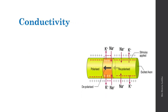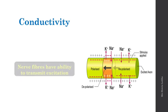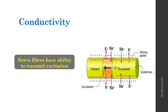Second is conductivity. Because of the change in ionic potential, nerve fibers are able to transmit excitation by the process of polarization, depolarization, and repolarization. Every part of the nerve fiber initially is in a polarized state, then becomes depolarized, then repolarized. Due to action potential, the nerve fibers conduct or transmit the excitation or nerve impulse.